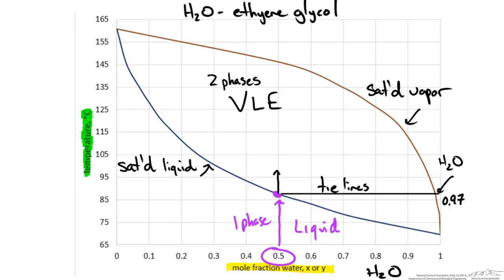Let us say we move up to 105 and we draw our tie line at 105. Now our vapor will have a mole fraction of 0.93 which is less. You can see the trend of our saturated vapor line will continue to decrease our mole fraction of the more volatile component water as we increase in temperature. Now this part is important.